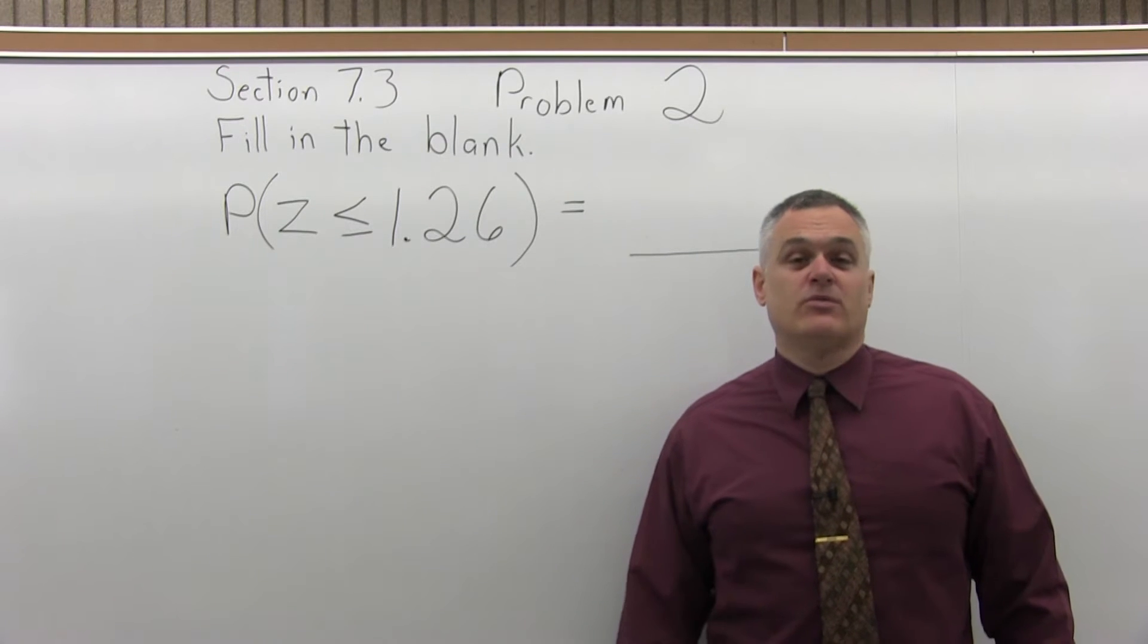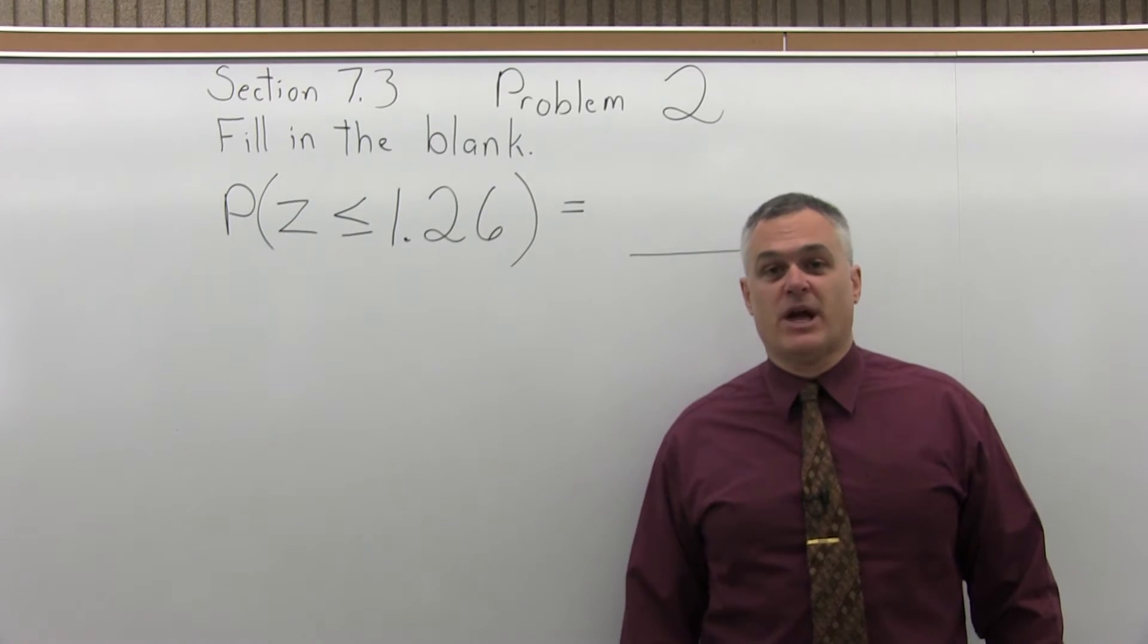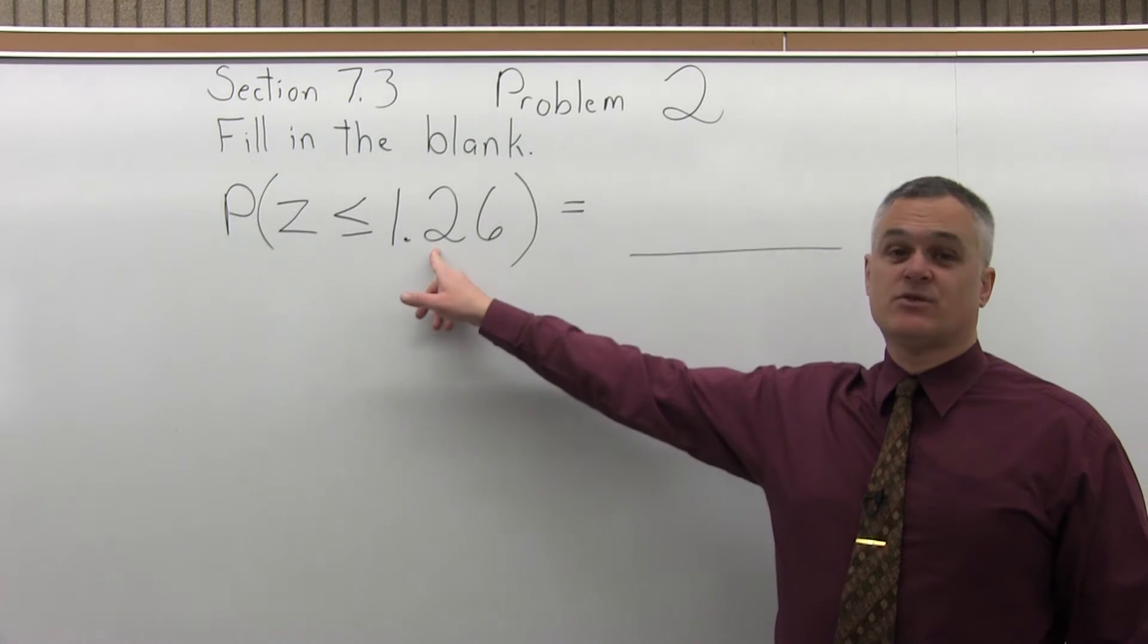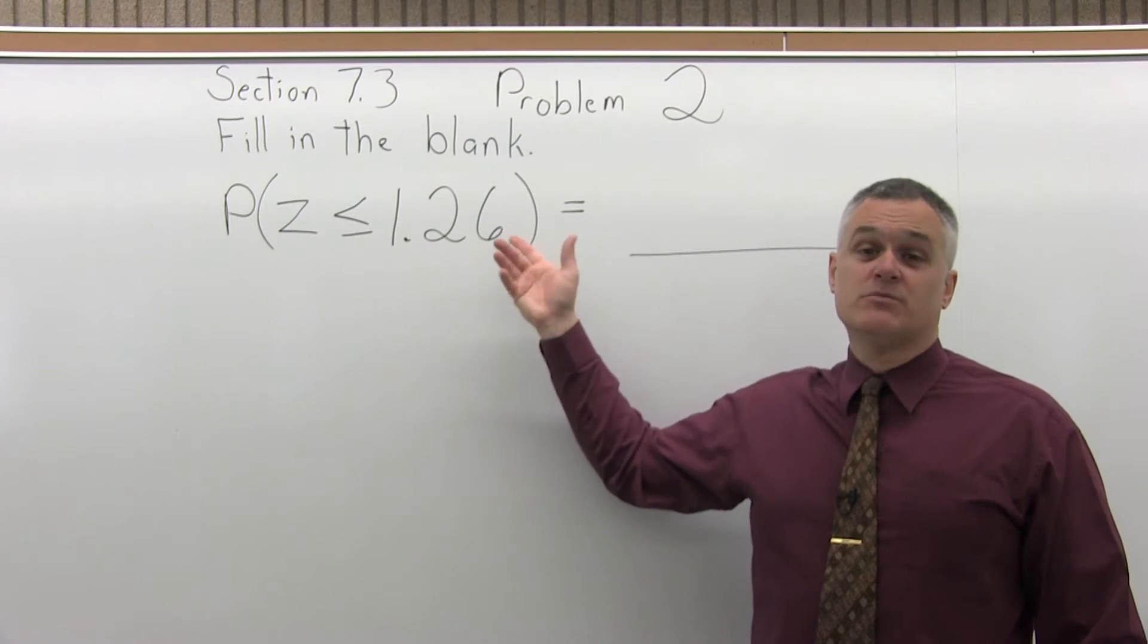This is Section 7.3, Problem 2. It says, fill in the blank. The probability that Z is less than or equal to 1.26 equals blank.